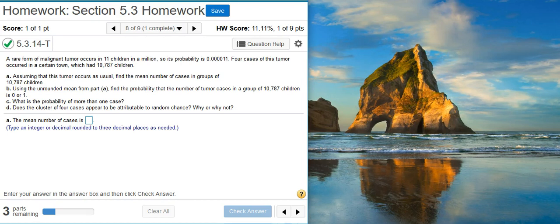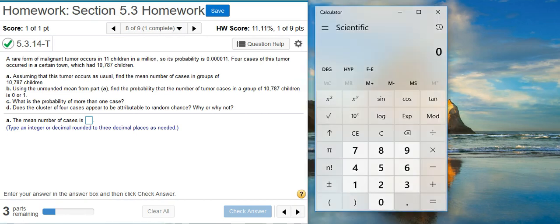Okay, Part A asks us for the mean number of cases. To calculate the mean, I'm going to whip out my calculator here. The mean is just going to be the total number of children that we're evaluating, which is 10,787, multiplied by the probability that these children are going to actually have one of these malignant tumors, which is 0.000011.